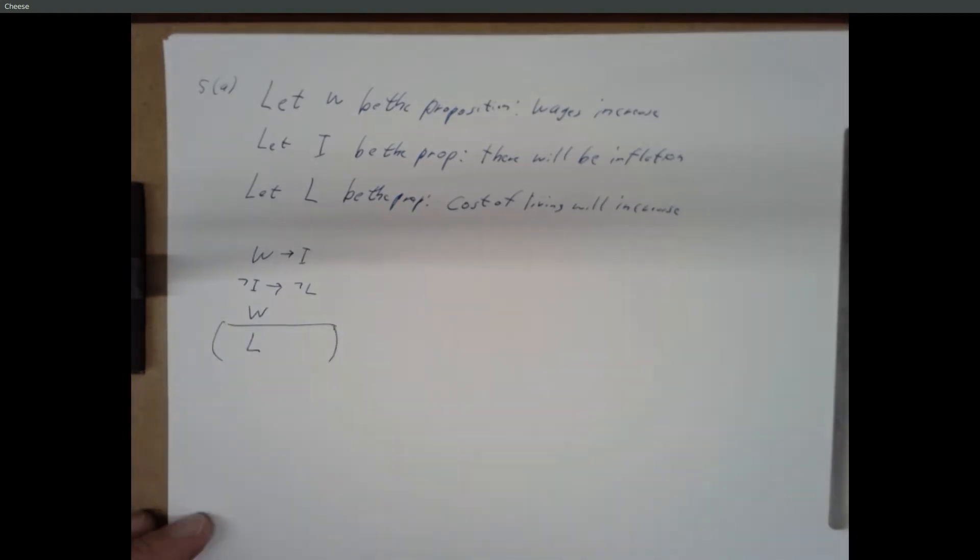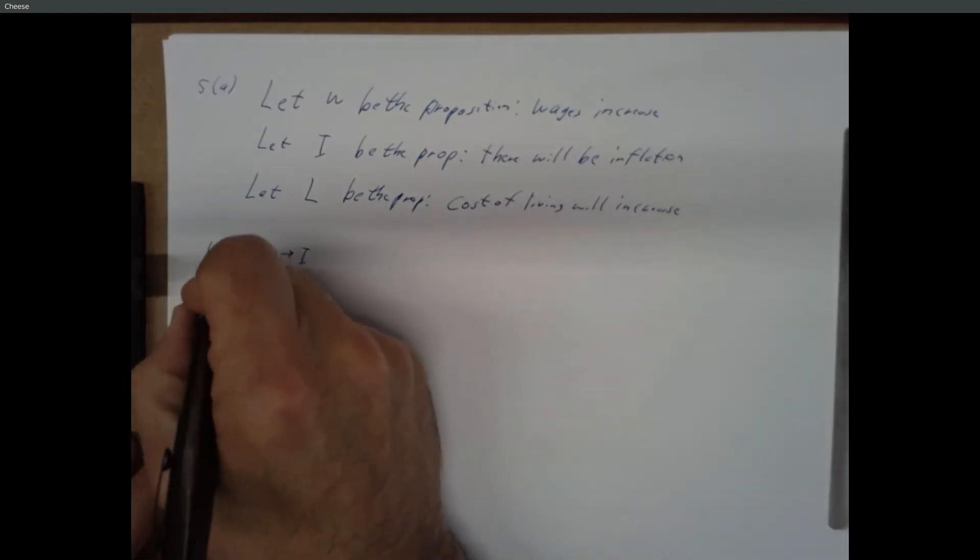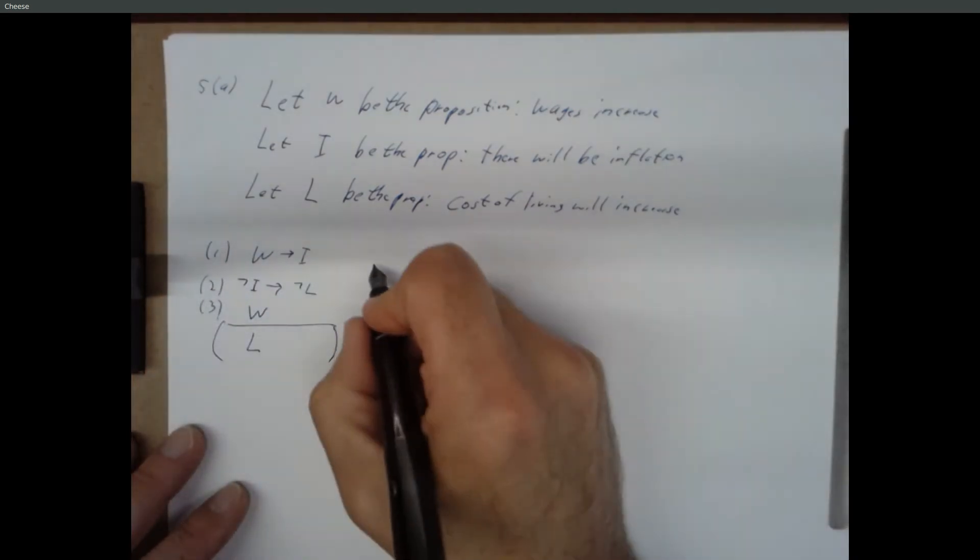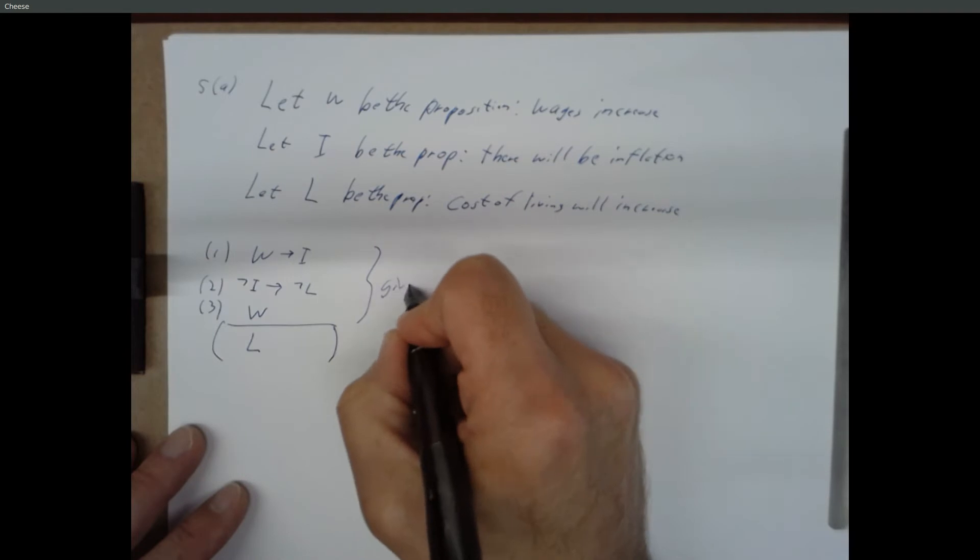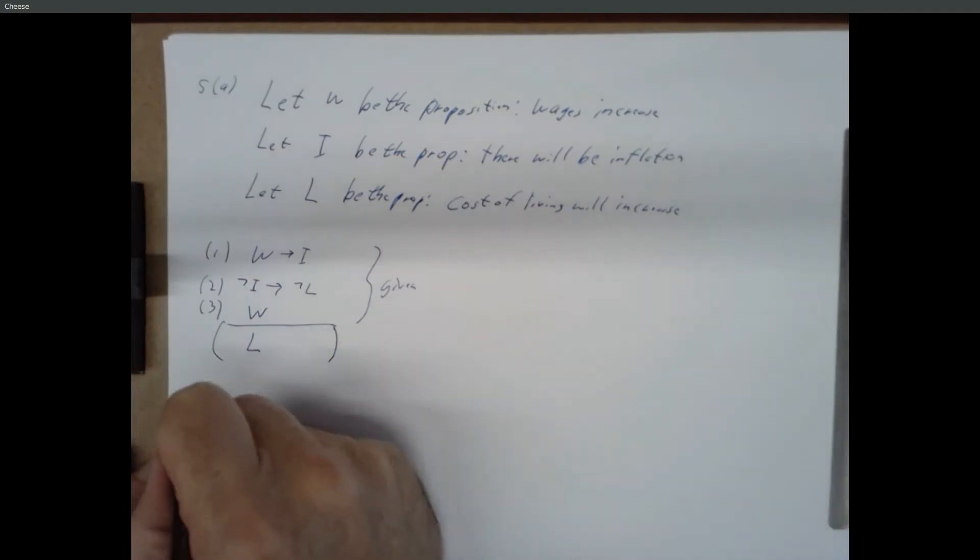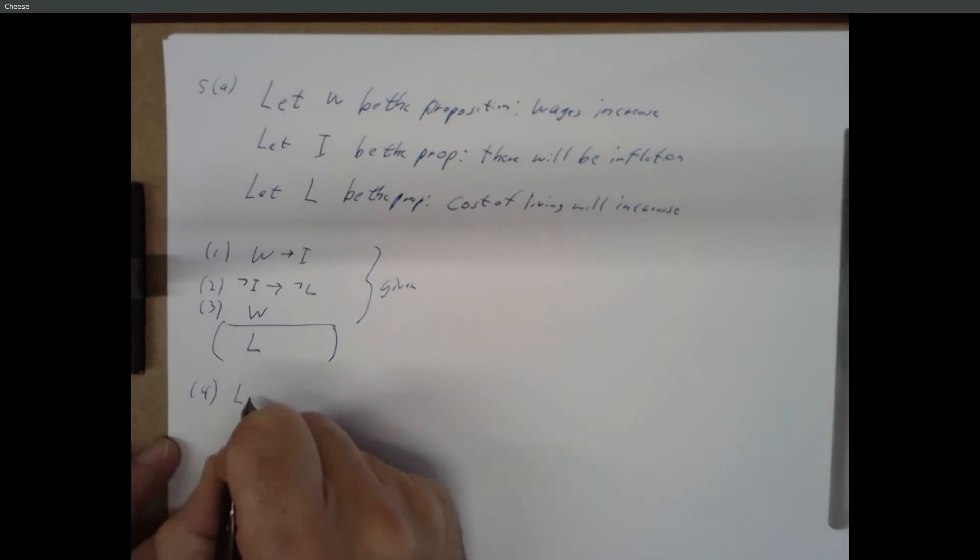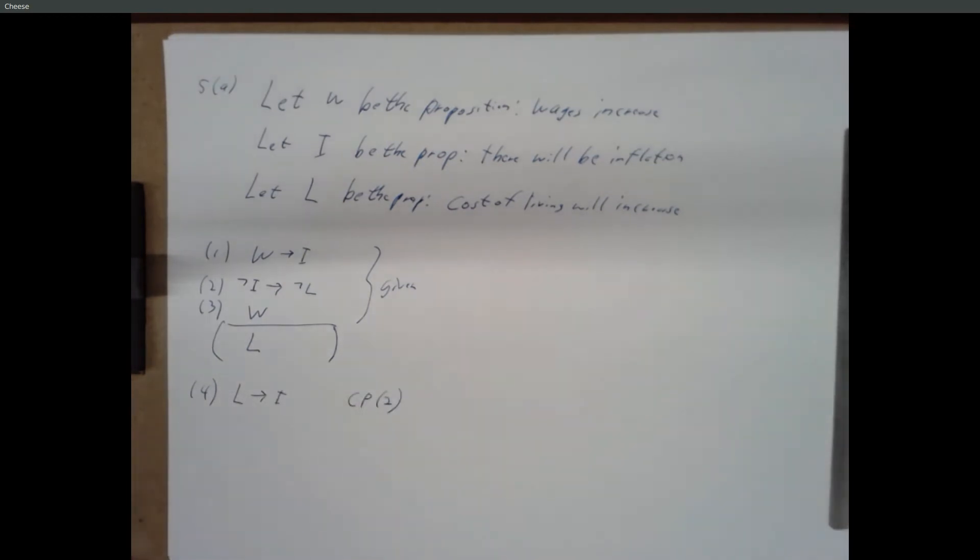What can we do with the three things we've been given? We could do DeMorgan's. Contrapositive, okay. So let's call this one and two and three. And these are given. And let's go down to four. So we can do the contrapositive of two, which means L implies I. That's the contrapositive of two.